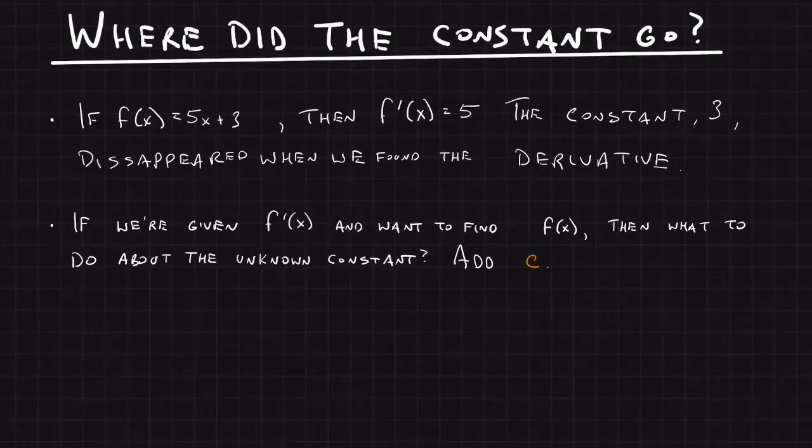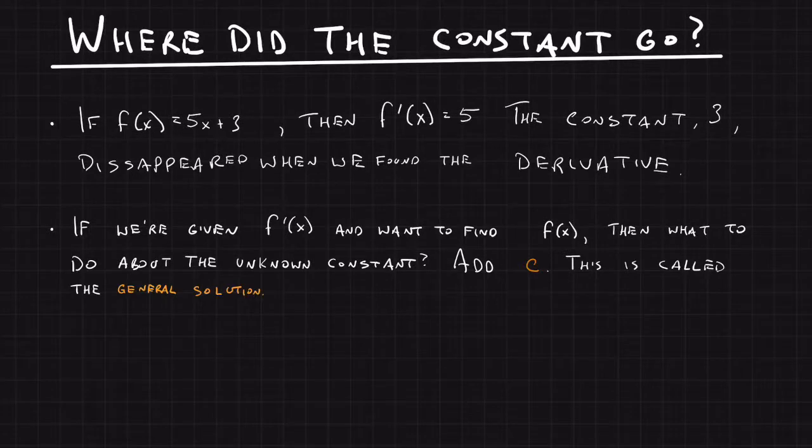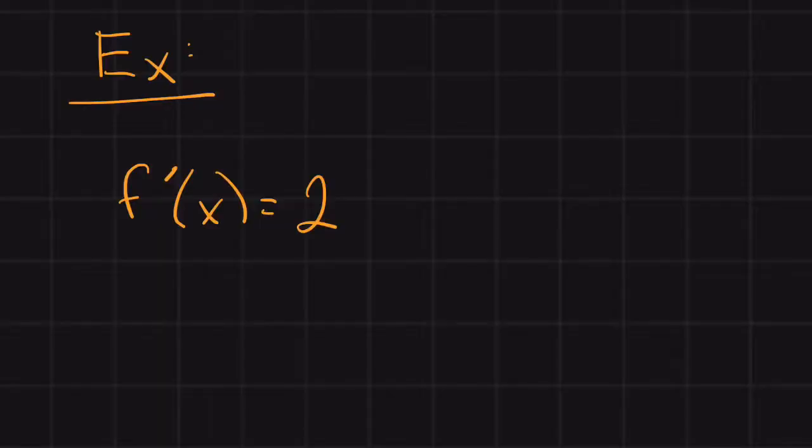We add C. The general solution contains a term of plus C, which is a placeholder for the unknown constant. Let's look at a few quick examples of adding the C. Let's say that we're given f'(x) = 2. We want to find f(x).